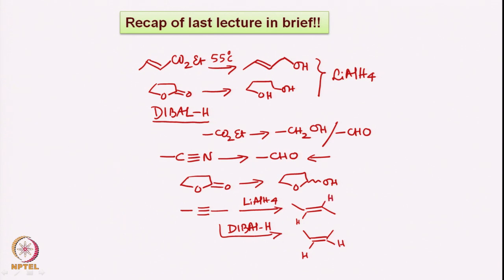Now I would like to explain why in the case of lithium aluminum hydride we get the trans olefin, and in the case of DIBAL we get the cis olefin. In the lithium aluminum hydride case, since the aluminum hydride is negatively charged, when it attacks onto the acetylene, the attack occurs from the side opposite to where the electron density is moving — that is, from the lower side — while the electron density of the pi cloud moves away towards the upper side.